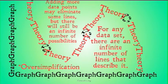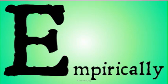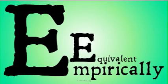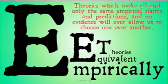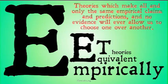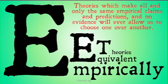This is a bit of an oversimplification, but hopefully it gives you the intuition. The idea is that the evidence we have can be used to support any number of theories, so long as those theories account for all the evidence. What we're really going to be talking about here are empirically equivalent theories — theories which make all and only the same empirical claims and predictions, such that no evidence will ever allow us to choose one over another. Not only can we not show one to be true right now, but no matter how much more data we gather, we will never be able to.